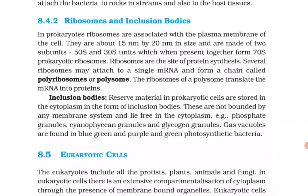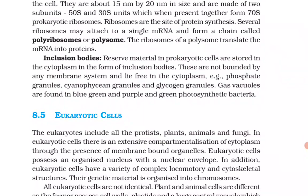Ribosomes and inclusion bodies: in prokaryotes, ribosomes are associated with the plasma membrane of the cell. They are about 15 nm by 20 nm in size and are made of two subunits — 50S and 30S units — which when present together form 70S prokaryotic ribosomes. Ribosomes are the site of protein synthesis. Several ribosomes may attach to a single mRNA and form a chain called polysomes or polysome. The ribosomes of a polysome translate the mRNA into proteins.